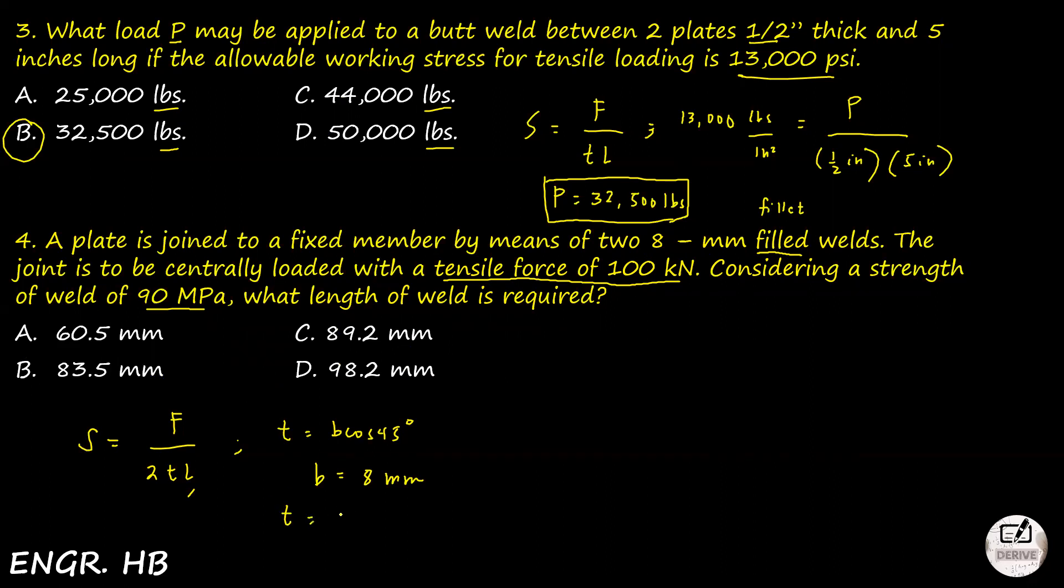Our throat thickness is 8 cosine 45 degrees. I'll write straight to the formula now. Our S is 90 MPa or 90 N per square millimeter equals F, which is 100 kN. That becomes 100,000 N because 1,000 N is 1 kN. We have this 2 under, and we have this thickness which is 8 cosine 45 degrees times length. It's that easy. Just put it in the calculator. That's 100k divided by 2 divided by 8 cosine 45 degrees divided by 90. The answer is 98.21 millimeters. Obviously the answer is letter D. Beware of C, 89.2. You might be so overwhelmed that you pick C because the digits are adjacent or jumbled. That's all for rivets and welds.